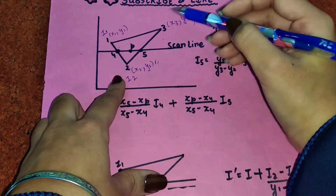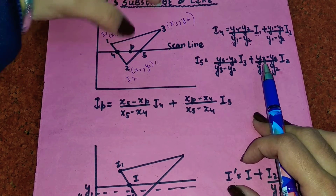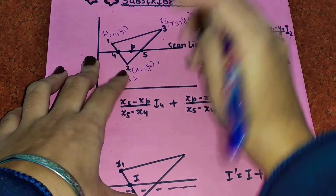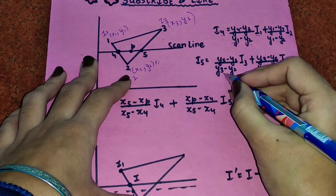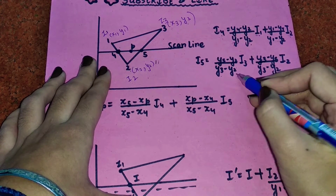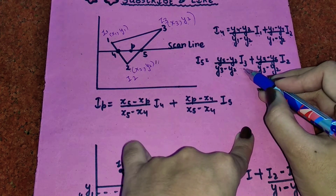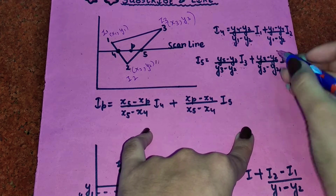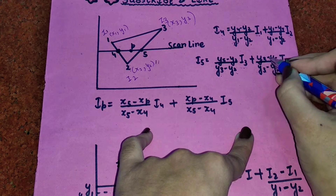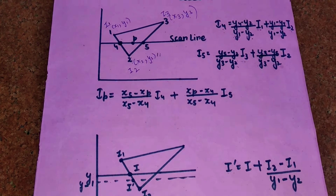To calculate the intensity I5, we use points 2 and 3 since point 5 lies between them. The formula is: I5 = [(y2 - y5)/(y3 - y2)] * I3 + [(y3 - y5)/(y3 - y2)] * I2. The denominator is y3 minus y2. Where y2 is used in the numerator we multiply by I3, and where y3 is used we multiply by I2.